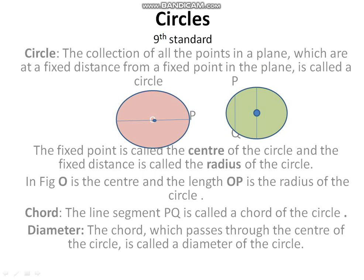The fixed point is called the center of the circle, and the fixed distance is called the radius of the circle. In the first figure, the center is O — O is the center of the circle, and OP is the radius of the circle.